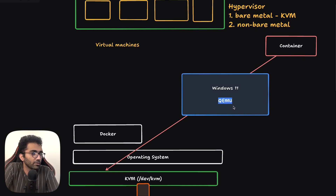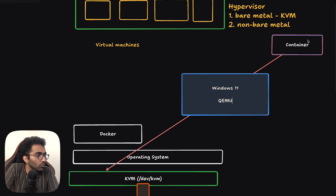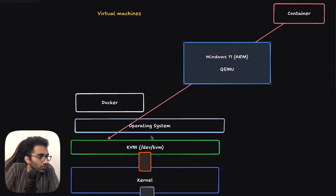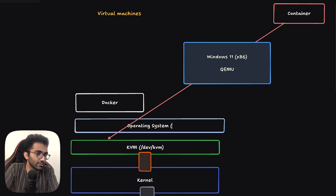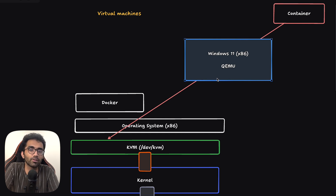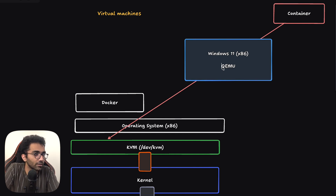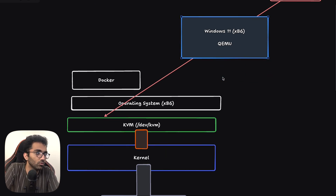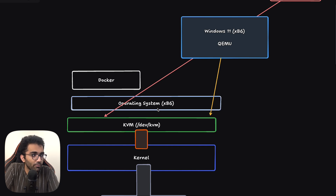The problem with QEMU is that because it's software-based, let's say you want to run Windows on ARM while your main operating system is x86. Quick Emulator has to translate every single instruction — every single thing Windows 11 is doing, like clicking File Explorer, double-clicking, opening files — these are instructions which need to be translated at the software level. However, if you combine QEMU with KVM, it can interact with KVM directly, bypassing the operating system, which speeds up the process a lot.